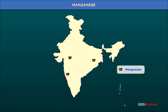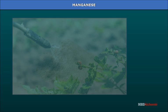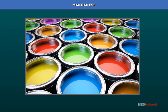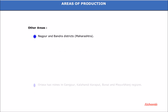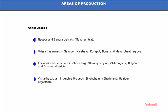Manganese. Manganese is a ferro-alloy metal used in the production of steel and preparing alloys. Nearly 10 kg of manganese is required to manufacture 1 ton of steel. It is also used in the manufacture of bleaching powder, insecticides, and paints. In India, manganese is found in areas obtained from igneous rocks. The main reserves are located in Orissa, followed by Karnataka and Madhya Pradesh. Other areas include Nagpur and Bhandara districts, Maharashtra.